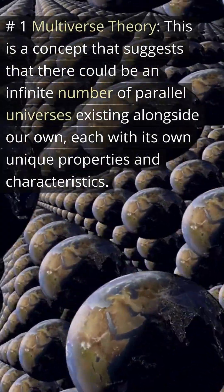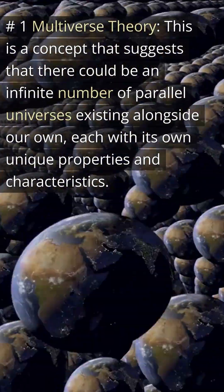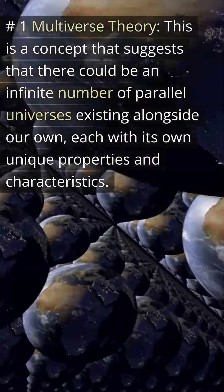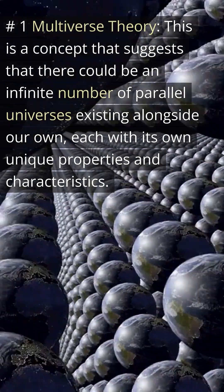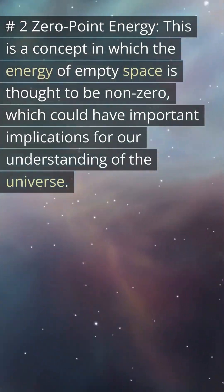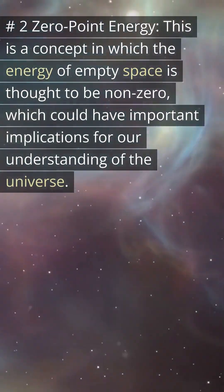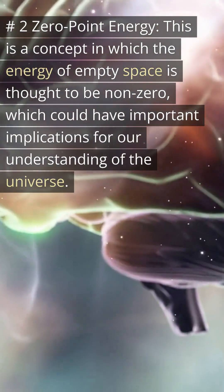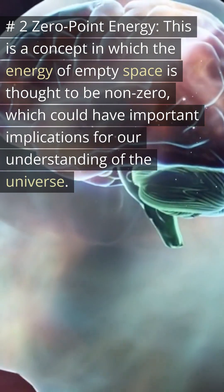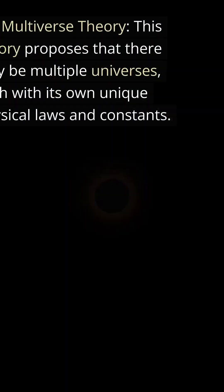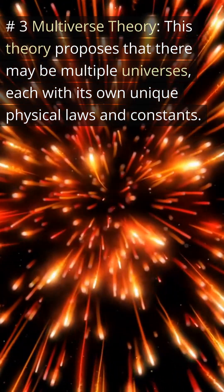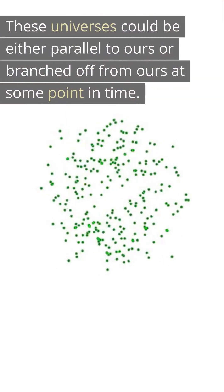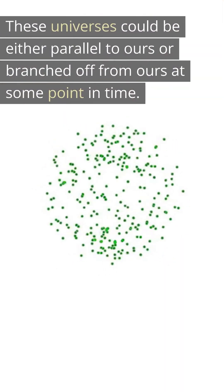Number one: multiverse theory — this concept suggests that there could be an infinite number of parallel universes existing alongside our own, each with its own unique properties and characteristics. Number two: zero point energy — a concept in which the energy of empty space is thought to be non-zero, which could have important implications for our understanding of the universe. Number three: multiverse theory — this theory proposes that there may be multiple universes, each with its own unique physical laws and constants, either parallel to ours or branched off from ours.